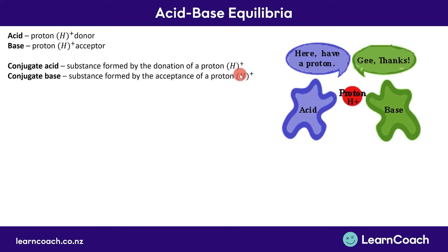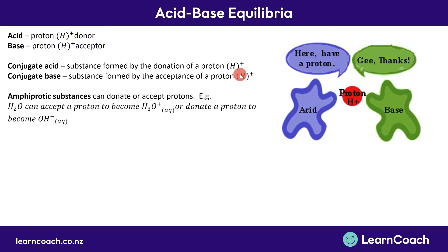This might seem a bit confusing but we'll go through a few examples later that will explain it better. Another key term for level 3 chemistry is amphiprotic substances. Amphiprotic substances can donate or accept protons. Your classic amphiprotic substance is water, because water can donate a proton and become OH⁻, or it can accept a proton and become H₃O⁺.